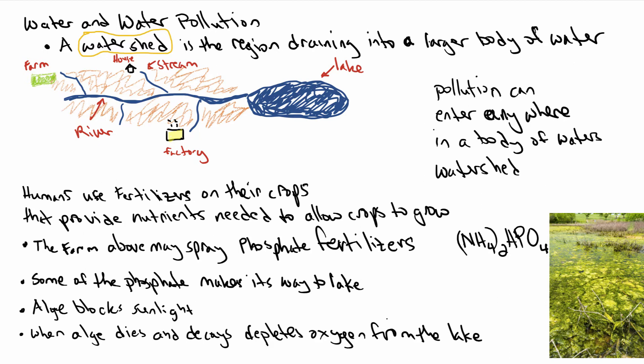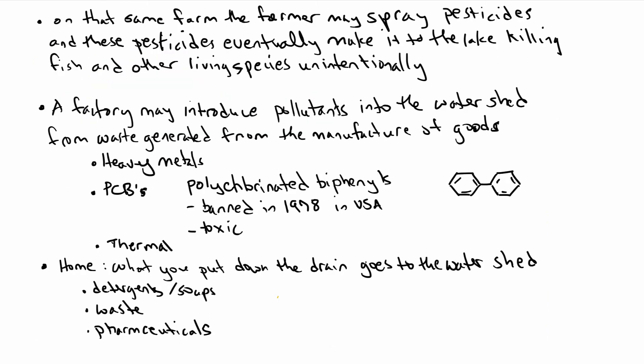When the algae dies, it decays and depletes the oxygen from the lake. This was probably not the farmer's intent — he just wanted to grow his crops — but the net effect is that further downstream the lake basically starts to die.